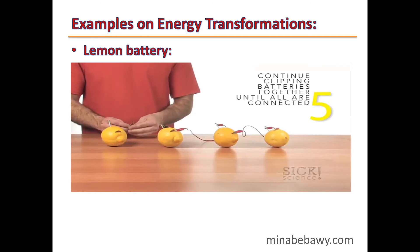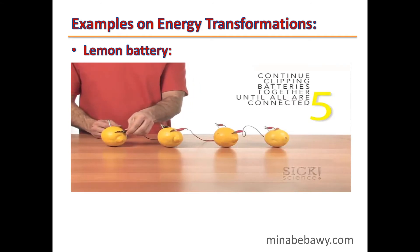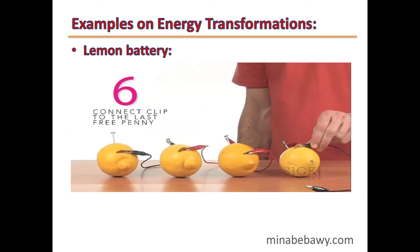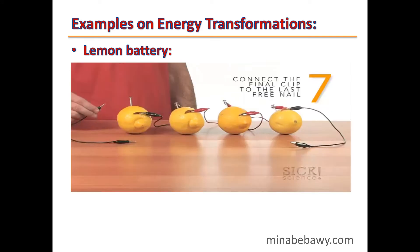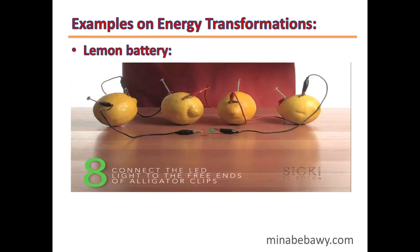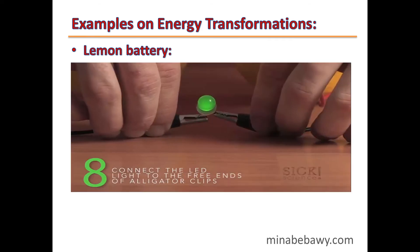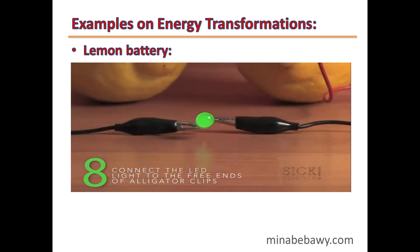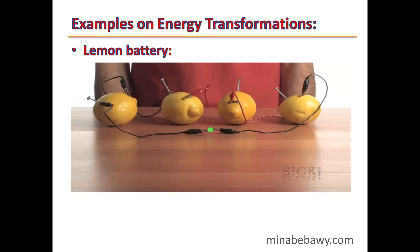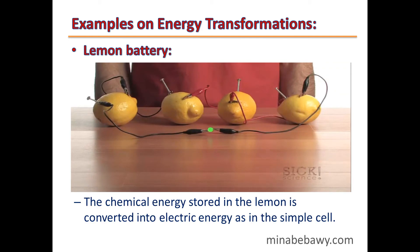Repeat this with 2, 3, or even 4 lemons. Connect the first coin with a wire and the last nail with another wire, then connect the two wires to a lamp. You will notice that the lamp will light up. By this way, we converted the chemical energy stored inside the lemon into electric energy. This is the idea of the assembled cell.